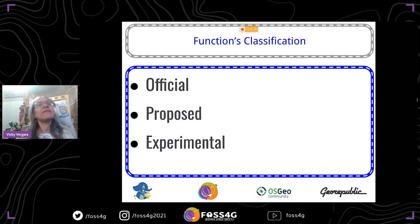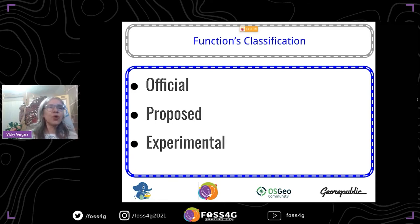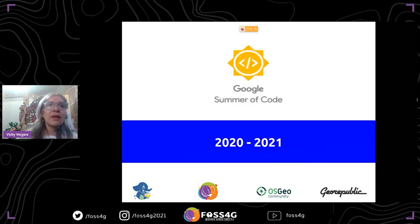In pgRouting we have several classifications of functions: official, proposed, and experimental. Experimental functions are the newest, normally written by Google Summer of Code students. Once we have user feedback, they move to proposed, and in the next major version they become official. Please try to use the experimental functions. Soon we will release version 3.3 — a minor release — which will contain new functionality from student contributions from Google Summer of Code 2020 and 2021.